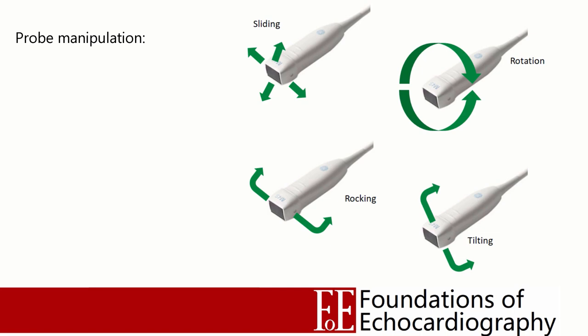To summarise, we have four main probe manipulations: sliding, rotation, rocking and tilting. When manipulating the probe it's advisable to use just one manipulation at a time, especially when you're first starting out.